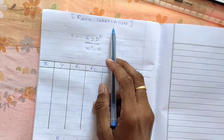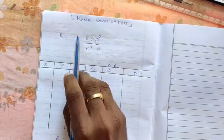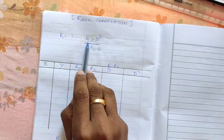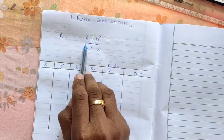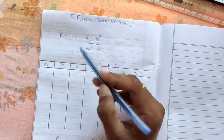So to find Rank Correlation, we use this formula. So Rank Correlation is denoted by capital R. So 1 minus 6 summation d square divided by n cube minus n. n is number of times.